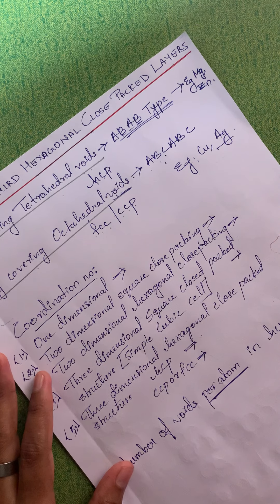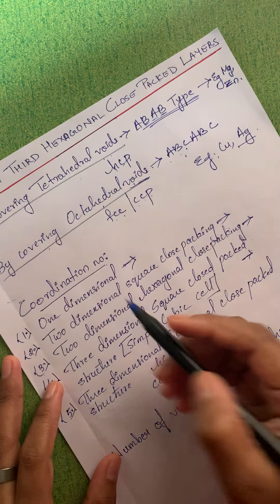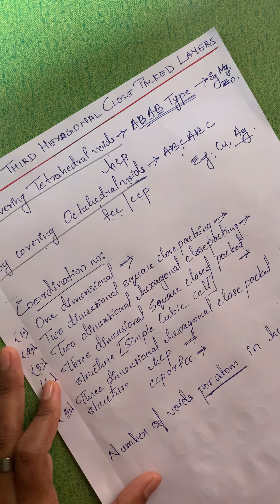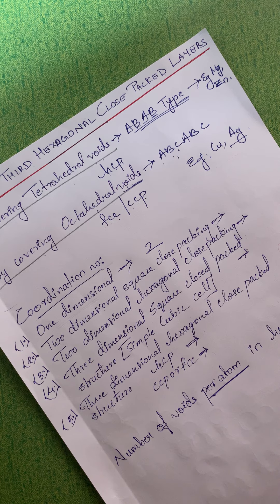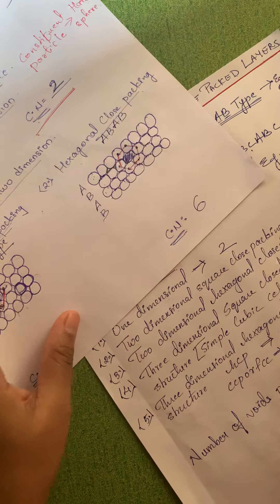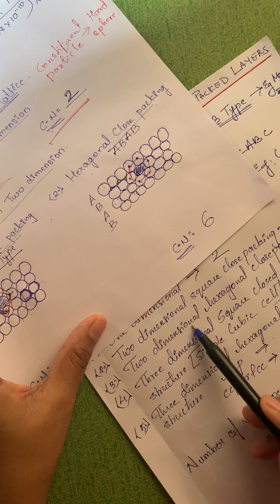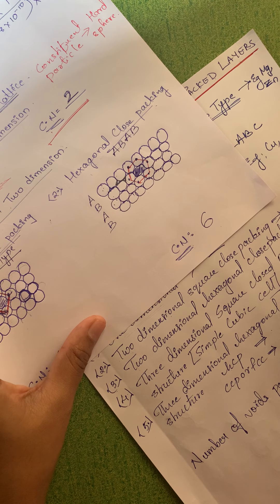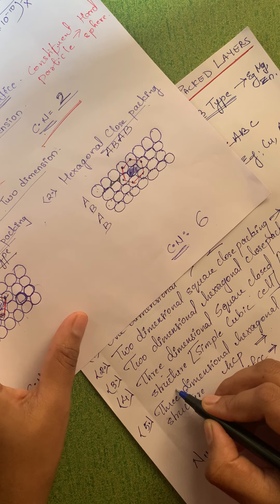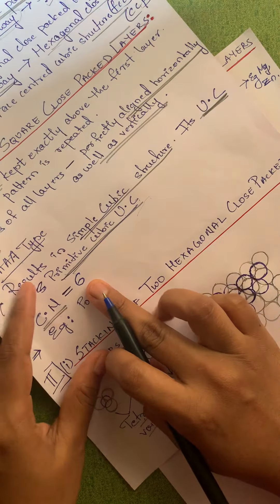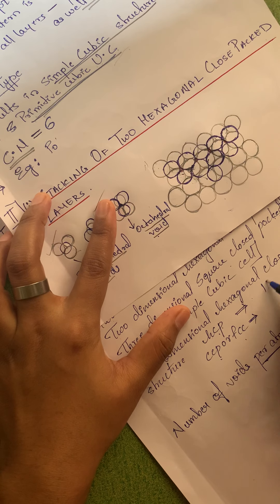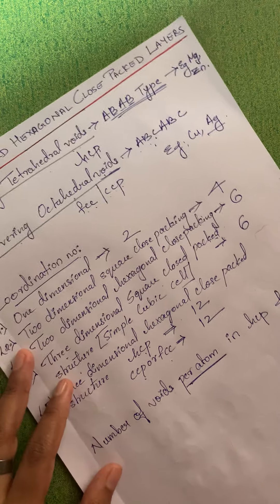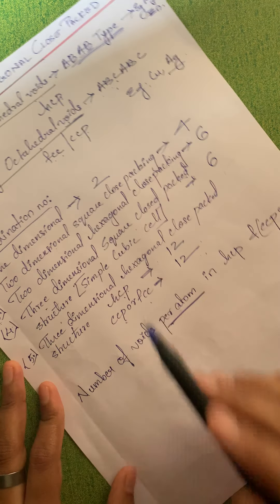Let's revise the coordination numbers: in one-dimensional packing it is 2; in two-dimensional square packing it is 4; in two-dimensional hexagonal close packing it is 6; in three-dimensional square close-packed structure it is 6 (four in one plane plus one above and one below); and in three-dimensional HCP, CCP, or FCC structures it is 12. Please learn this table carefully.